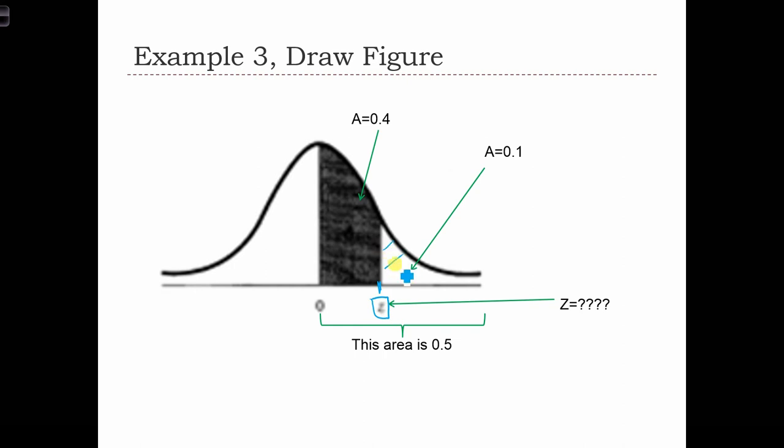That has only 10% of the area to the right of it. So what value of z only has 10% to the right? Now, based on the symmetry property, we know that if a z-score has 10% to the right of it, it has to have 40% between 0 and z.